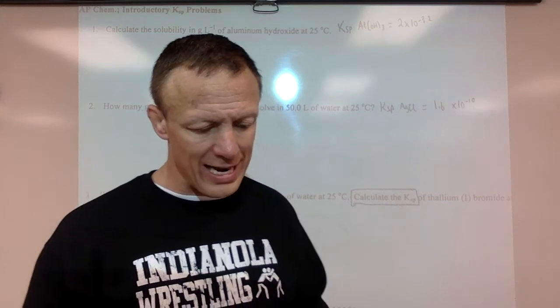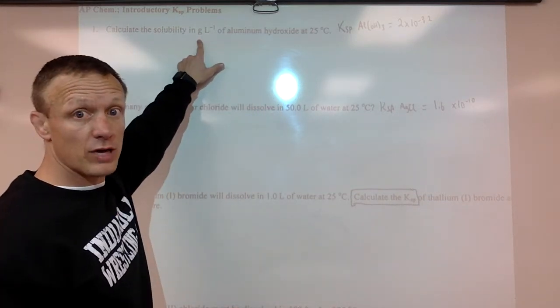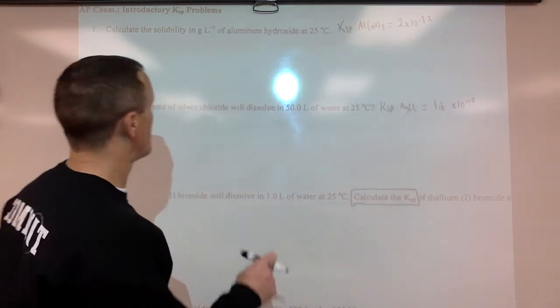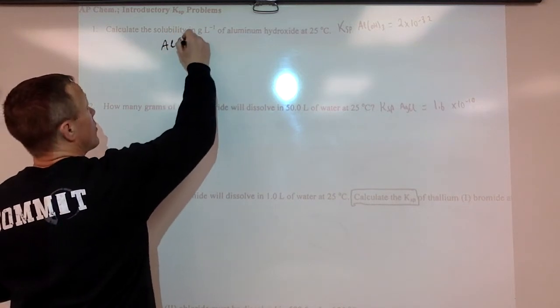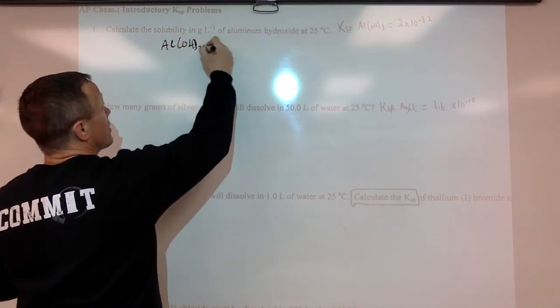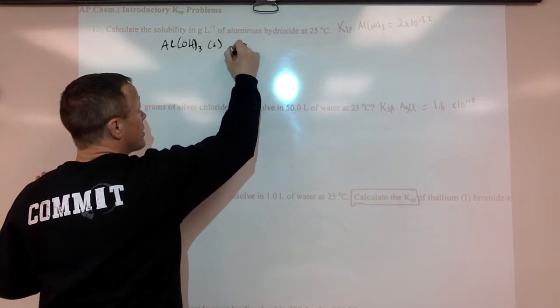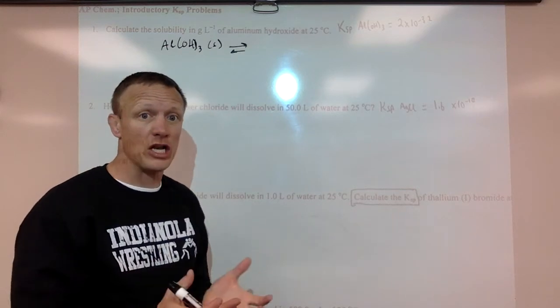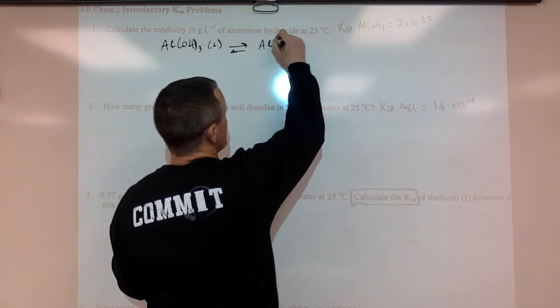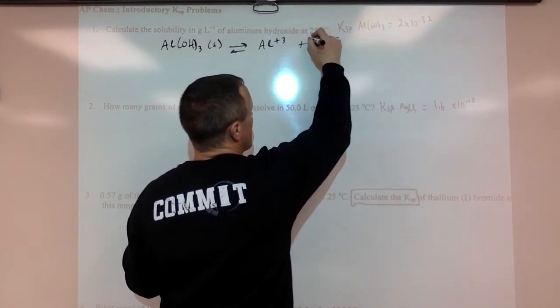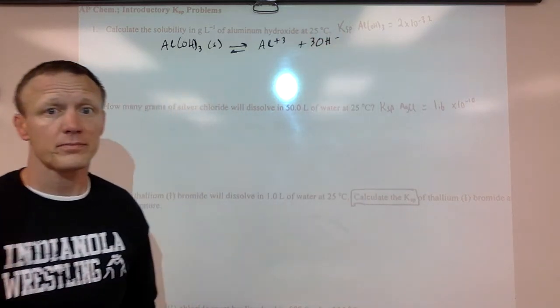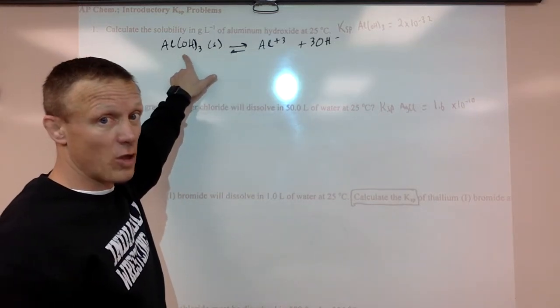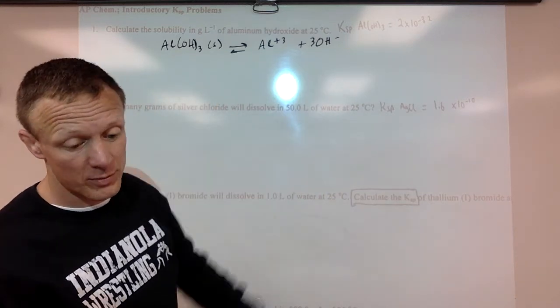So here you go. First problem, determine the solubility in grams per liter of aluminum hydroxide. So here's the KSP value, really small KSP value. So I'll usually write this out. Remember this is a solid, really small arrow to the right. Most of this is going to stay undissolved sitting at the bottom of the beaker. It will produce some aluminum ions and some hydroxide ions as it dissolves. Very, very few of these, not much of that will dissolve. It's going to stay solid and not split apart as ions because it's got such a small KSP value.